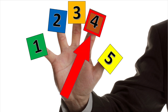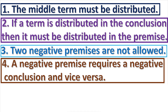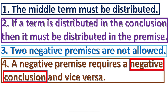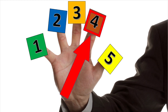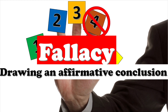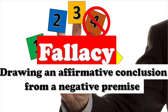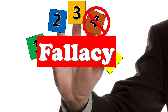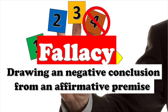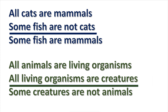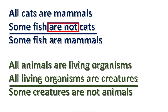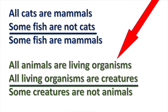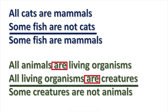Rule four says that a negative premise requires a negative conclusion, and a negative conclusion requires a negative premise. If this rule is broken, then the fallacy of drawing an affirmative conclusion from a negative premise is committed, or the fallacy of drawing a negative conclusion from an affirmative premise is committed. Notice: one syllogism draws an affirmative conclusion from a negative premise; another draws a negative conclusion from affirmative premises.